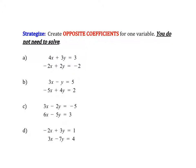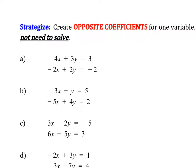Let's look at this first set of equations: 4x plus 3y equals 3 and negative 2x plus 2y equals negative 2. These are not opposite coefficients. If I look at 3 and 2, there's no easy way to turn a 2 into a 3 or vice versa, so I'm probably not going to focus on the y's. But if I look at the x's, I notice there's a pretty easy way to turn negative 2 into negative 4, giving us a set of opposite coefficients.